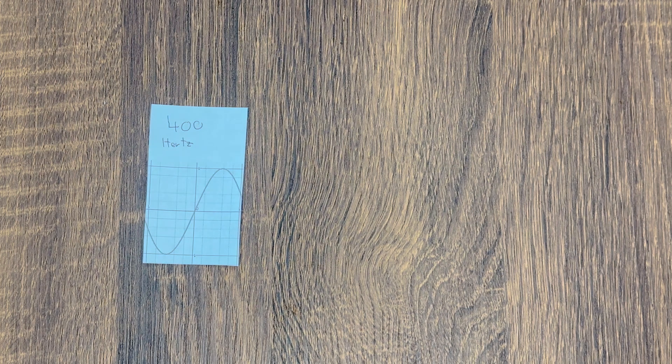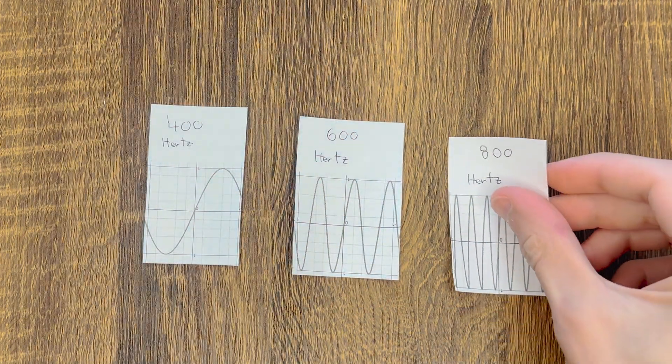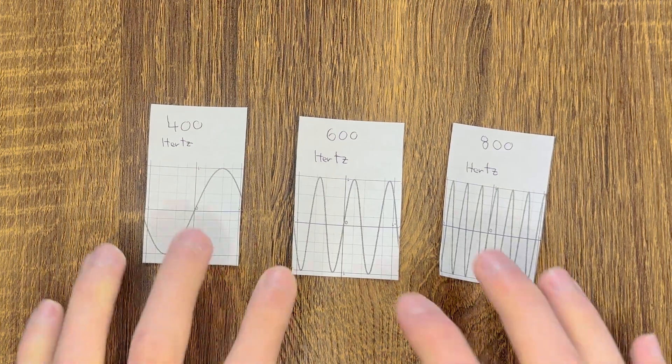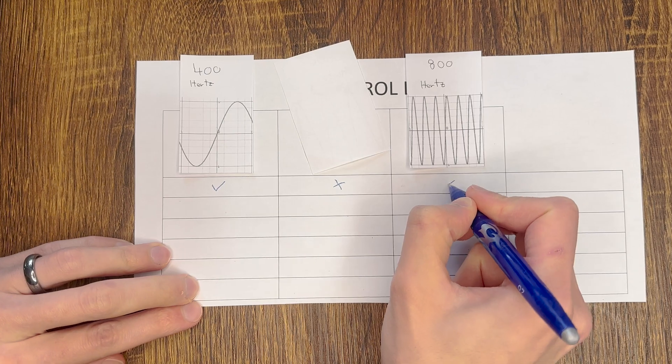Imagine I have three sine waves. One of them is a 400Hz tone, the other is a 600Hz tone, and the third is an 800Hz tone. By playing a combination of these three tones, I can tell the submarine what to do.